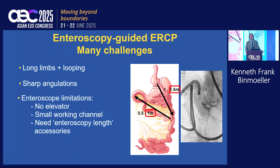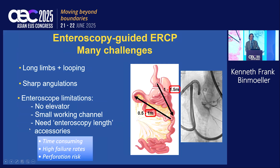Historically, if we wanted to do ERCP in patients with altered anatomy, we had to perform deep enteroscopy. This is time-consuming, it takes a great deal of effort. We have long limbs, a lot of looping, sharp angulations, especially entering into the afferent loop. There are limitations imposed by the enteroscope — no elevator, small working channel, and we need enteroscopy length accessories. So time-consuming, high failure rates, and there is perforation risk.